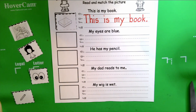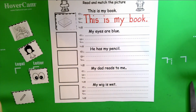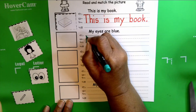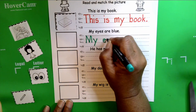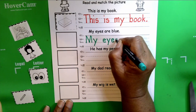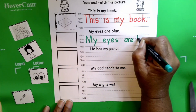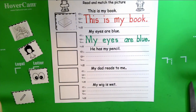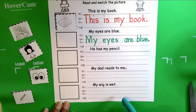Our next sentence is: my eyes are blue. Your turn — my eyes are blue. Let's write the sentence: my eyes are blue. How many words are in this sentence? One, two, three, four — four words. And our first sentence 'this is my book' also has four words.